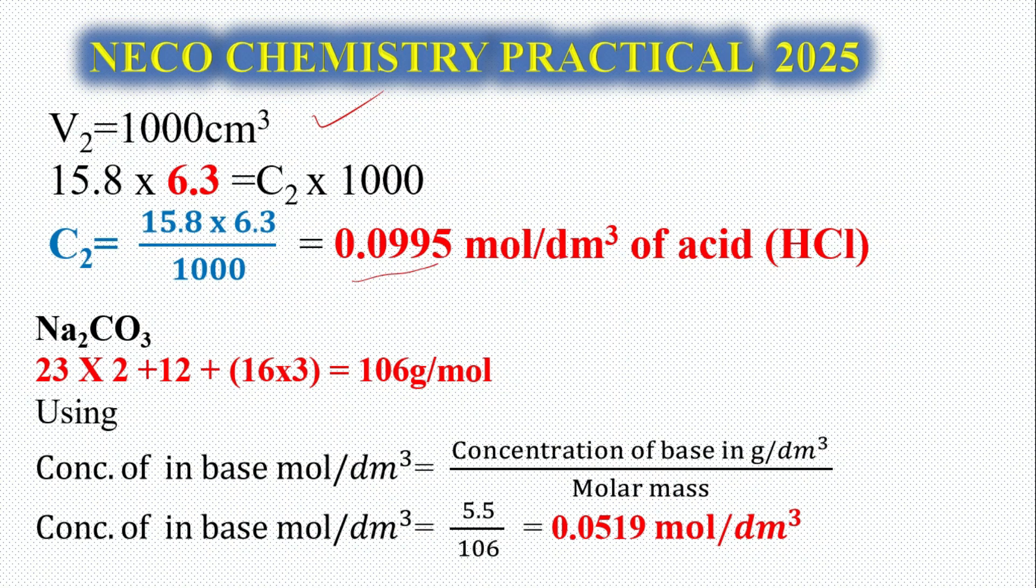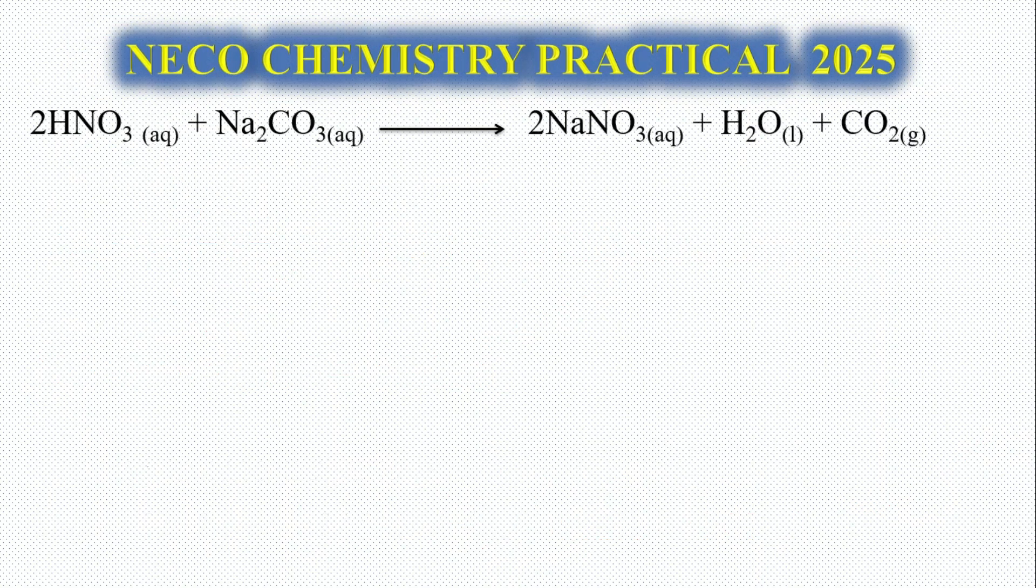Let's look at our base. The molar mass of our base is 23 times 2 plus 12 plus 16 times 3, everything gives us a total of 106 grams per mole. If we use concentration in mol per dm³ equals concentration in g per dm³ over molar mass, we have 5.5 divided by 106 which gives us 0.0519 mol per dm³ of the base.